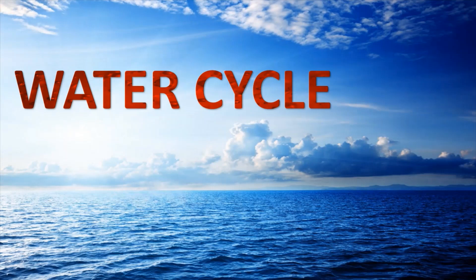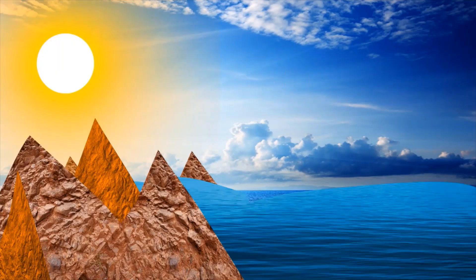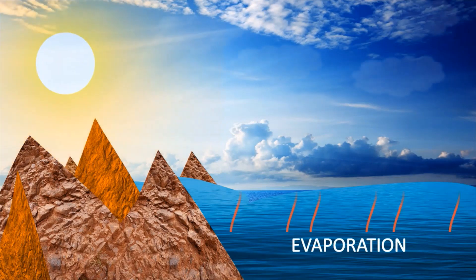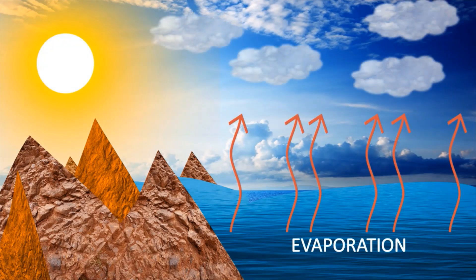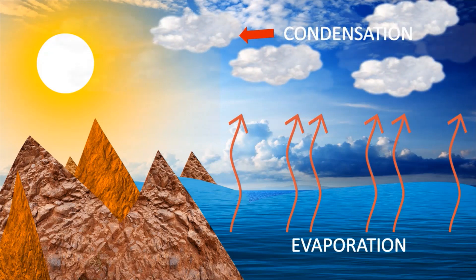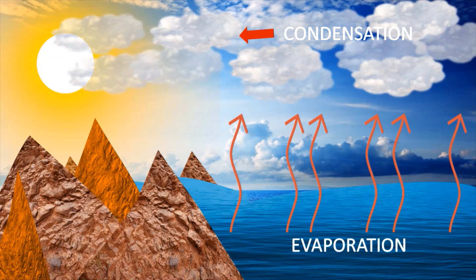Hello everyone. Today I am showing the process of the water cycle. Due to the Sun's heat, the water from a water body starts heating up and changes into water vapor through the process of evaporation. Then the water vapors condense and cool down.